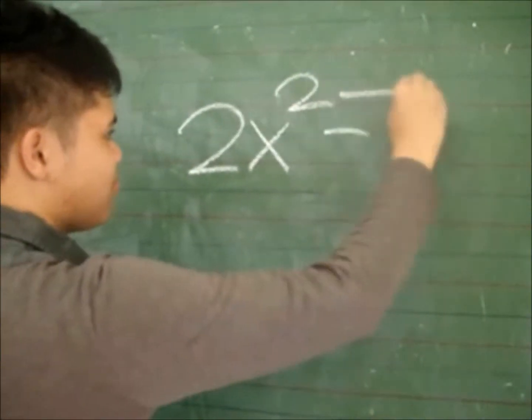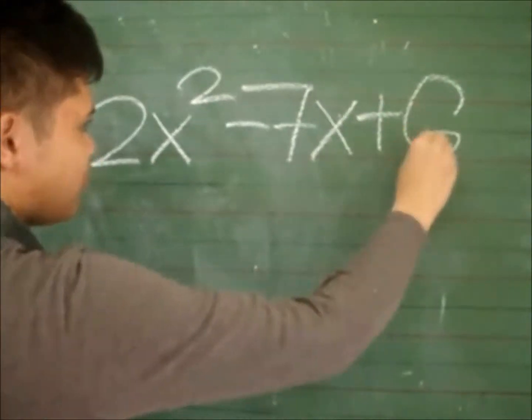Dear JJ, can you answer Sir Gerard's question? Question is 2X squared minus 7X plus 6.